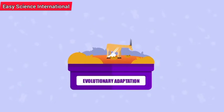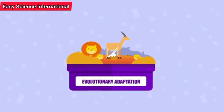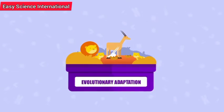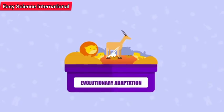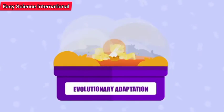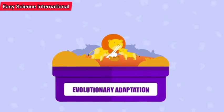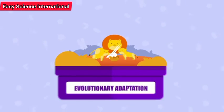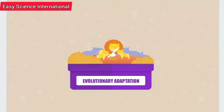The seventh characteristic is Evolutionary Adaptation. A lioness is camouflaged to blend in with the savanna, so as to easily take down an animal. Such adaptations evolve over many generations.